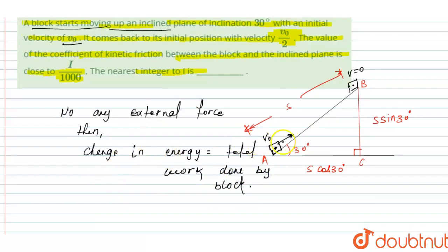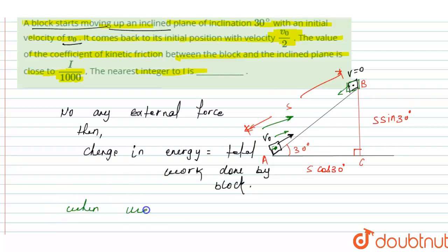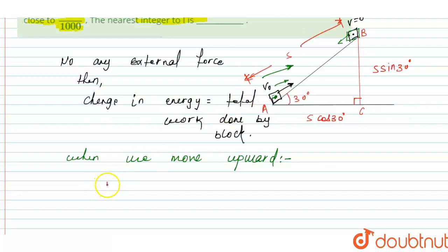When the block moves upward and returns to the same position, the total change in potential energy is zero. Only the change in kinetic energy matters. When moving upward, the kinetic energy is (1/2)·m·v0² = total work done by weight and friction on the block.